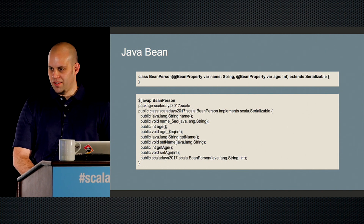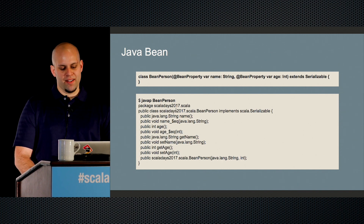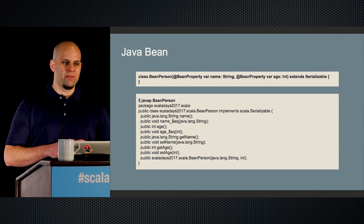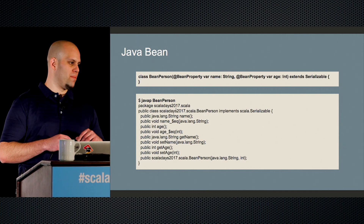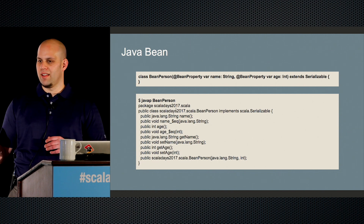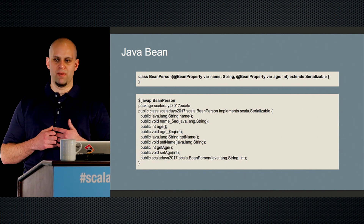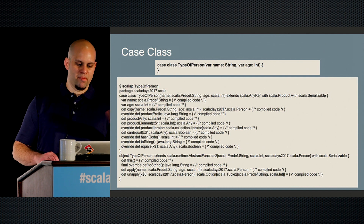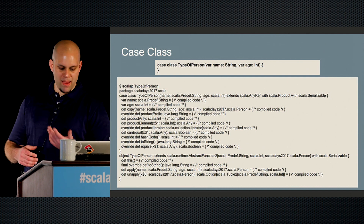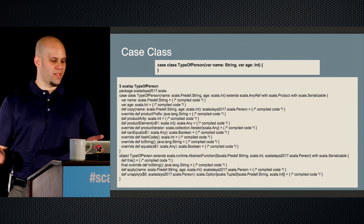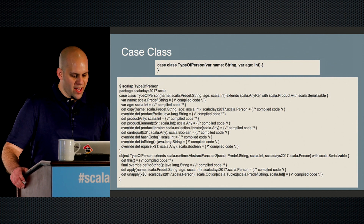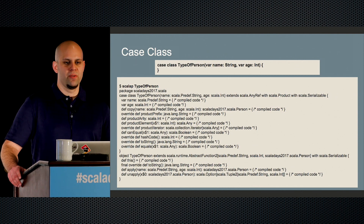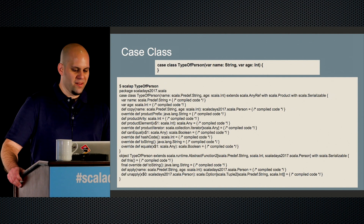Another Scala feature I really like is case classes. If I take off the @BeanProperty and I want different types of people — users, students, Scala Days attendees — I want to be able to pattern match on them. I put on the case keyword, and then I can do my pattern matching. But what is all this other code that gets put out by the compiler? I have productArity, productElement, I'm overriding productIterator — there's all this extra code generated just by having a case class.